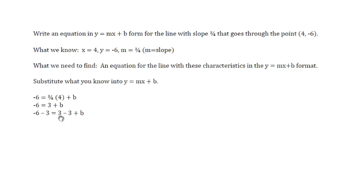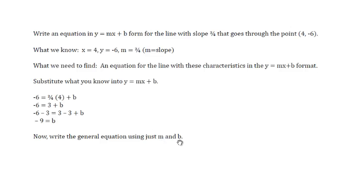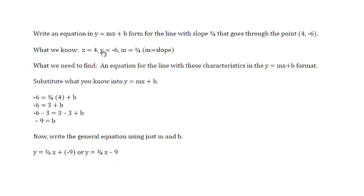Subtract 3 from both sides to get negative 9 equals b. We now know the value of b, the y-intercept. Now we'll write the general equation using just m and b: y equals mx plus b, which is three-fourths x plus negative 9, which can be written y equals three-fourths x minus 9. Use what you know to find b, then substitute in m and b and leave x and y as variables so that you have an equation for the line.